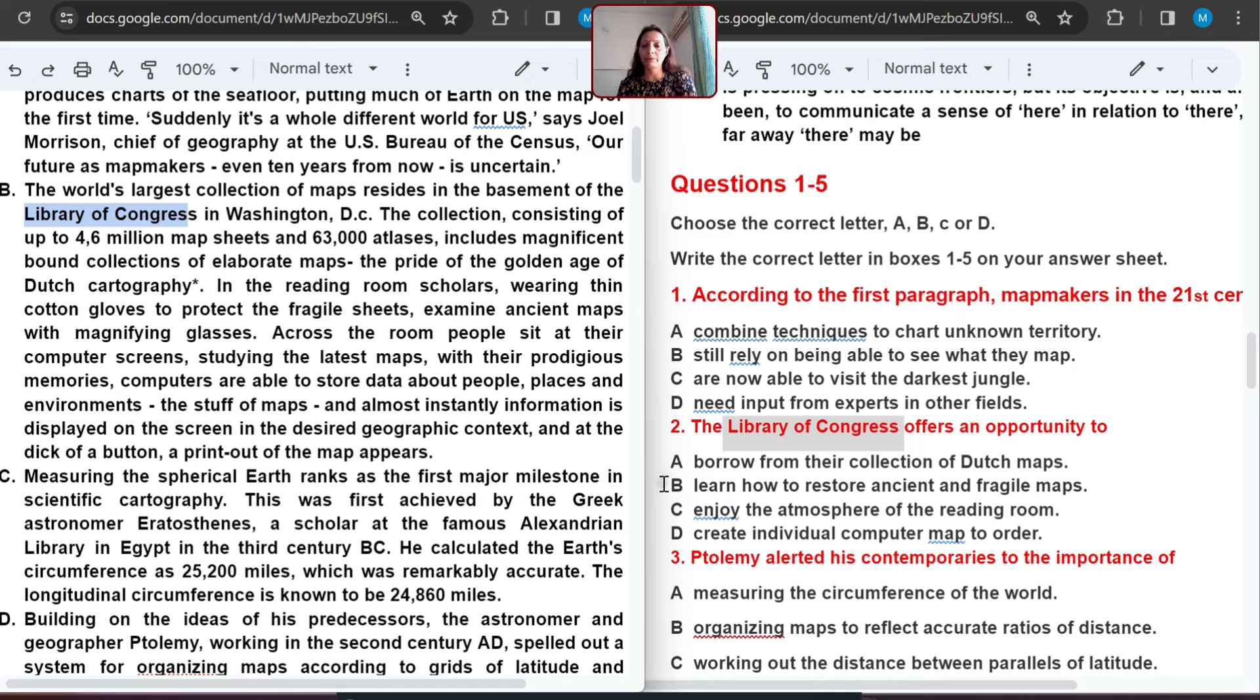In the reading room, scholars wearing thin cotton gloves to protect the fragile sheets examine ancient maps with magnifying glasses. Across the room, people sit at their computers studying the latest maps. These computers are able to store data about people, places, the stuff of maps, and almost instantly information is displayed on the screen in the desired geographic context. And at the click of a button, a printout of the map appears. Borrow from their collection of Dutch maps - borrow kind of thing is missing. Learn how to restore - learning is also not there. Enjoy the atmosphere - enjoyment is also not there. Create individual computer maps to order. At the click of a button, this is given. So we can select D number.